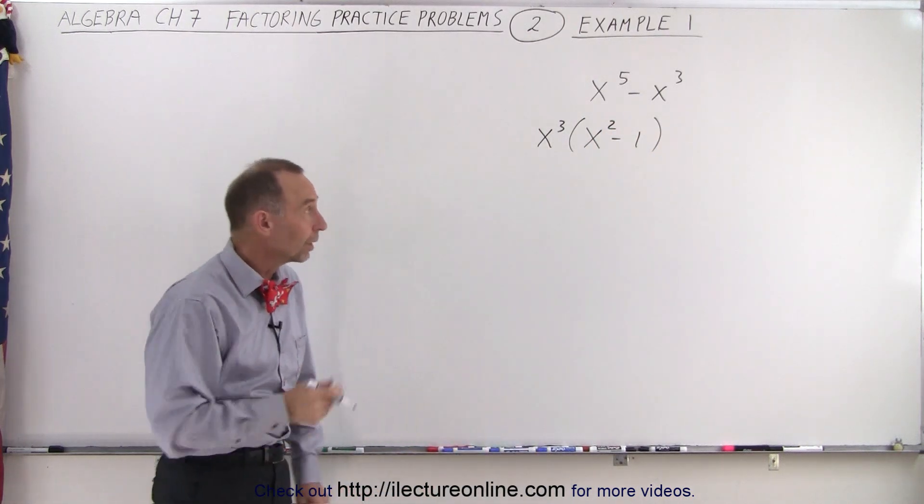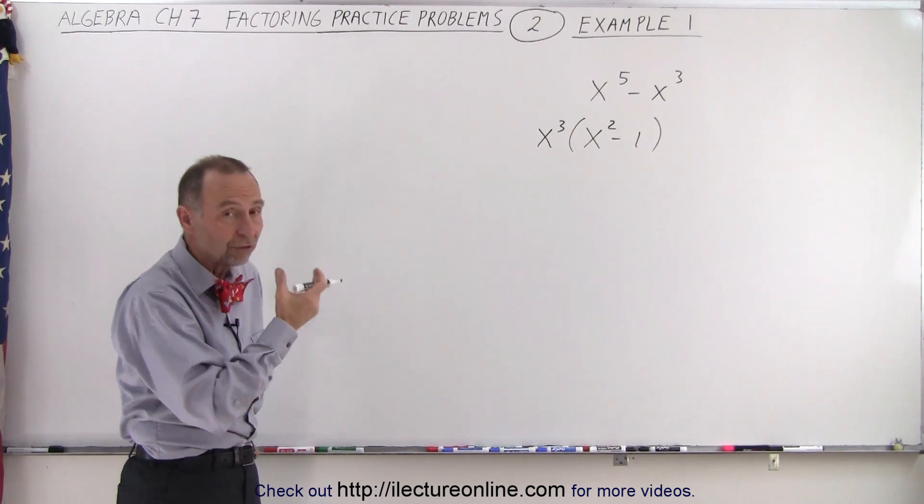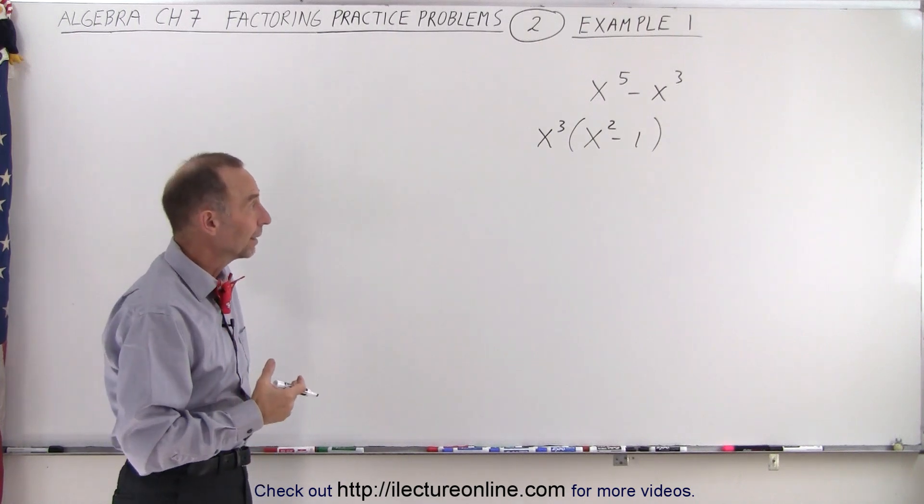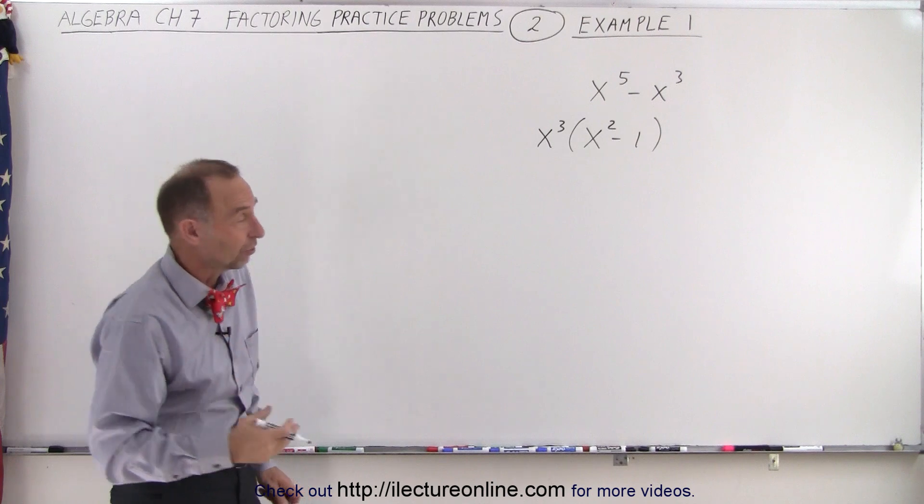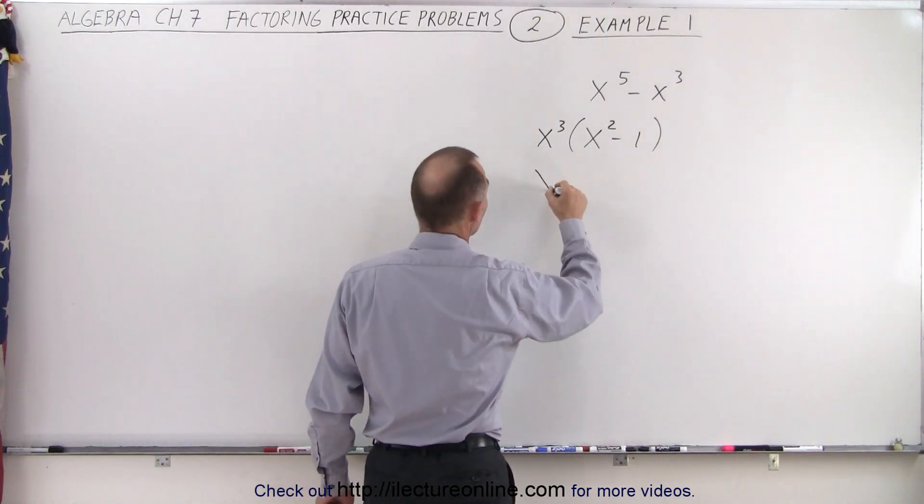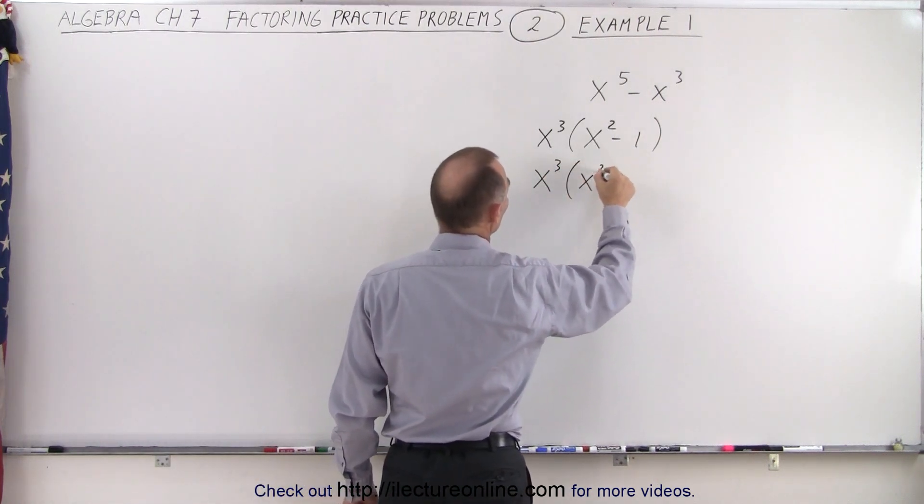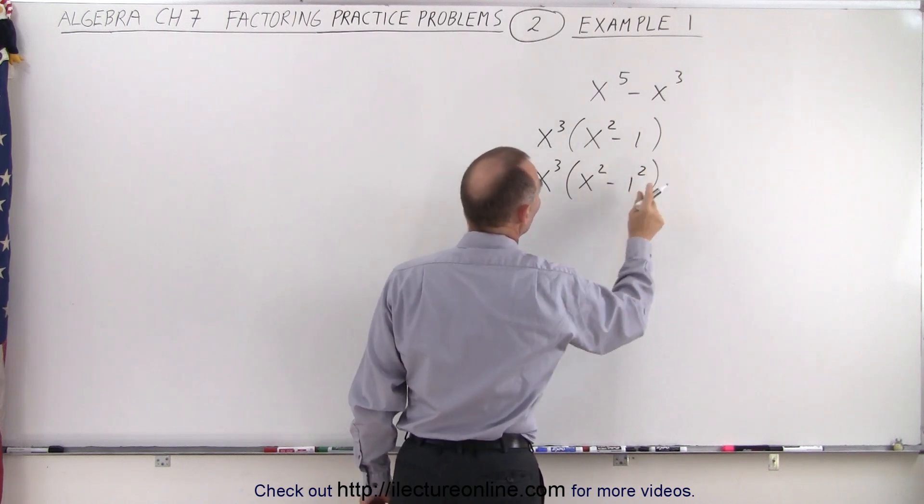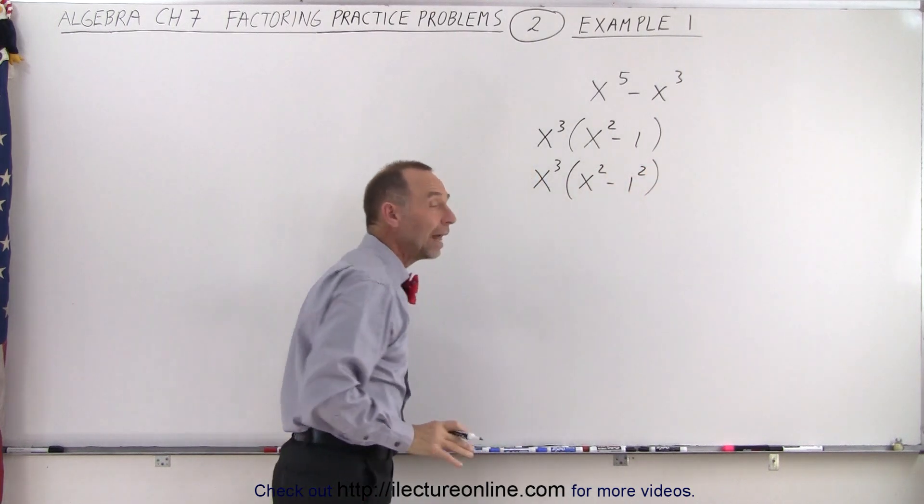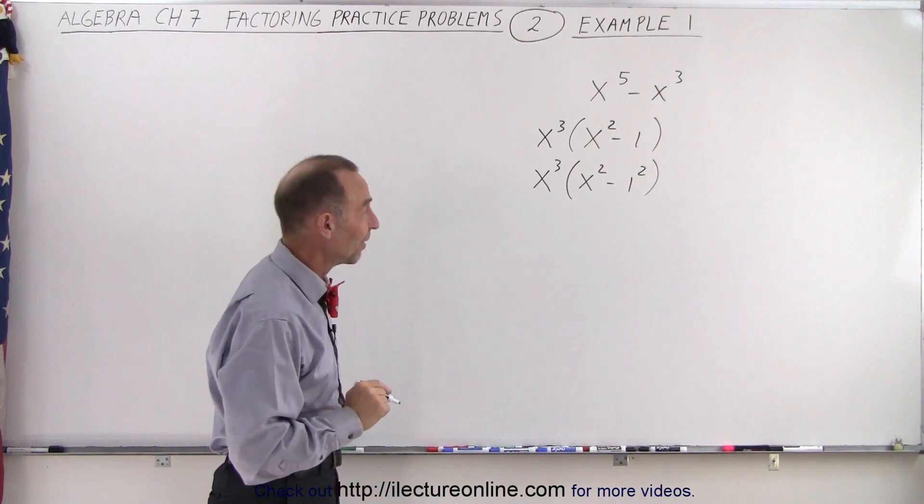Then we need to look at that x squared minus one and determine, is that a special form that we need to know about? It turns out it's actually the difference of squares. So this can actually be thought of as x cubed times x squared minus one squared. So once you see that, then you go, ah, I know how to factor this one.